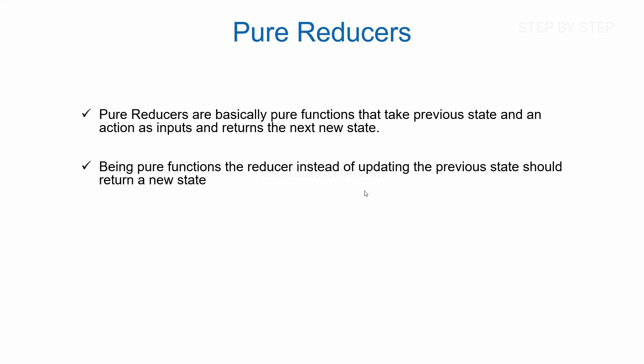For example, previously I was having 10 books inside my store. Now I have added one more book, so my new state will be 11 books. If I have removed a book, then my state will be 10 books. This is how pure reducers work — the reducer takes previous state and action as arguments and returns the new state without updating the previous state.